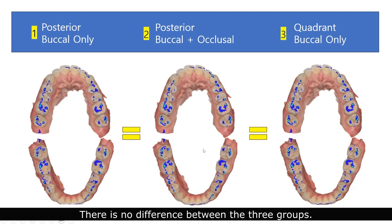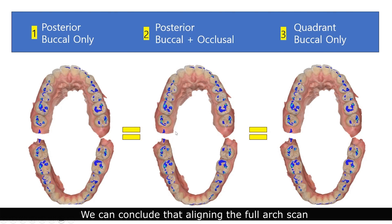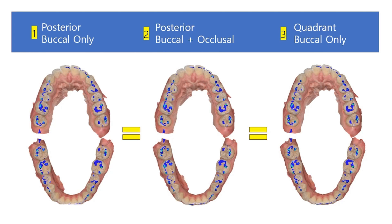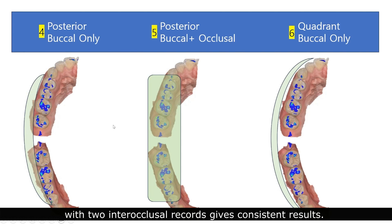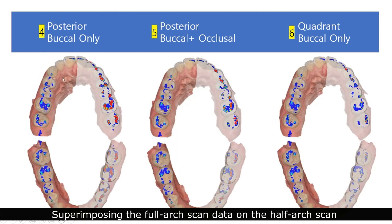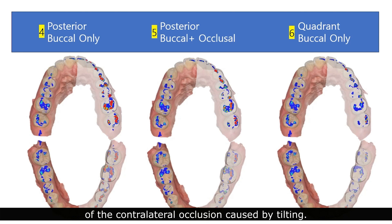There was no difference between the three groups. This was a common and consistent observation across all three. We can conclude that aligning the full-arch scan with two inter-occlusal records gives consistent results. The half-arch scan used one inter-occlusal record. The inter-occlusal scan position is the same as before. Superimposing the full-arch scan data on the half-arch scan made it possible to compare the occlusal contacts of the contralateral occlusion caused by tilting.